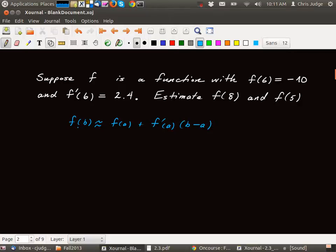So in this case, what we want to understand is what f of b is. So in this case we want to understand what f of 8 is, so b should be 8. And the things that we know are what f of a is and what f prime of a is. So a is going to be 6.